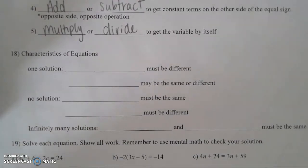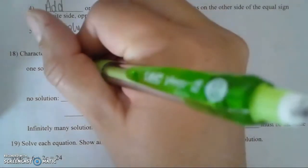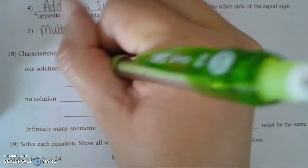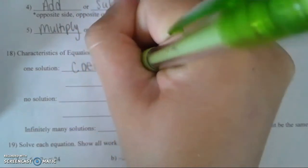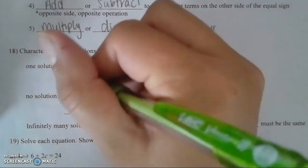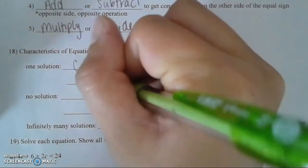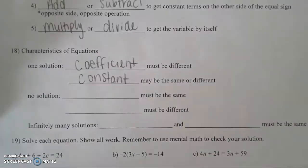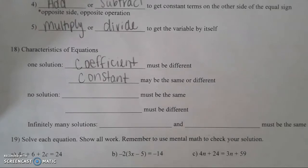For one solution, the coefficient must be different. Remember, the coefficient is attached to the variable. The constant may be the same or different. If you have that, the equation will turn out to have one solution. For no solution, the coefficient has to be the same.